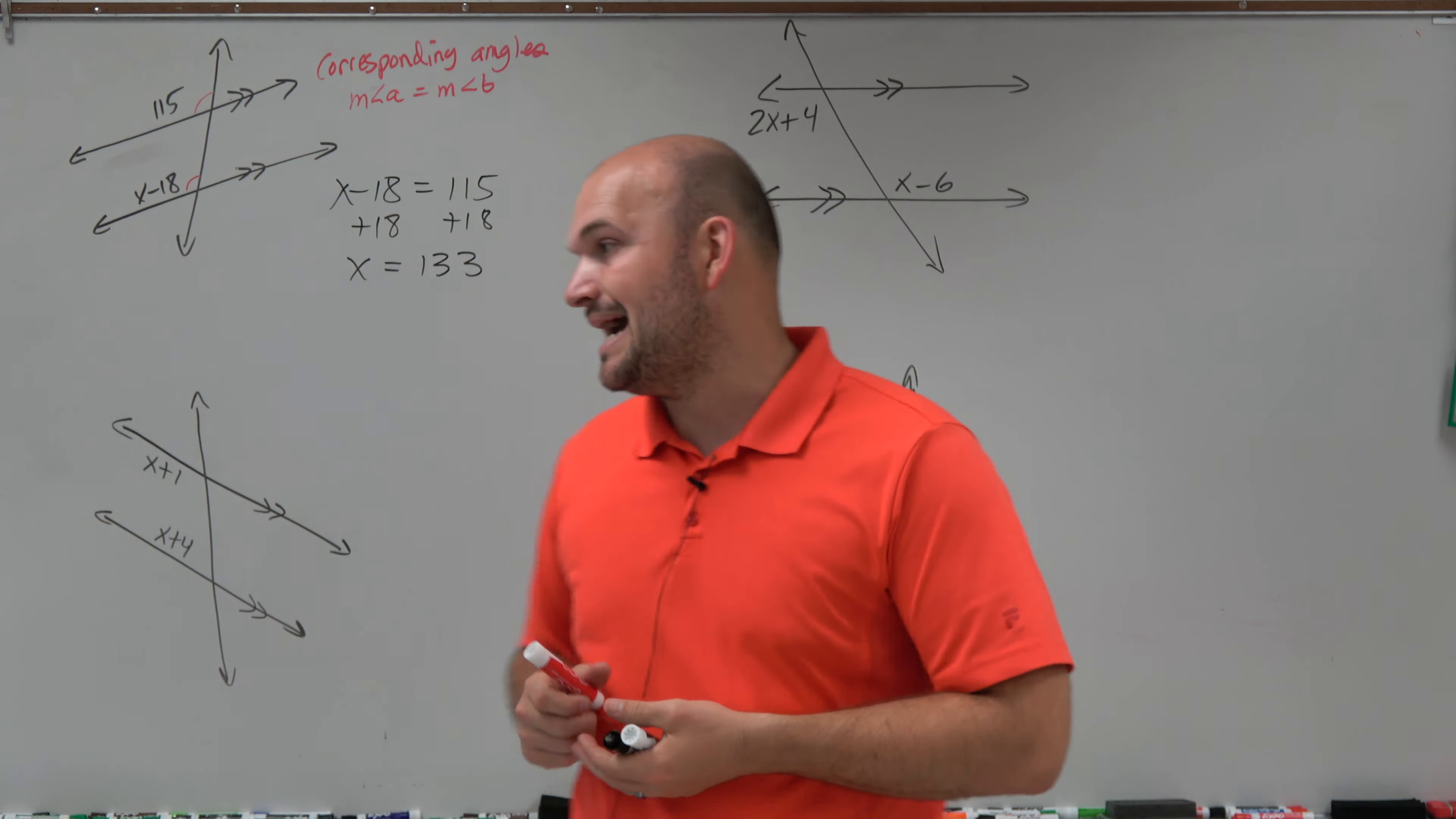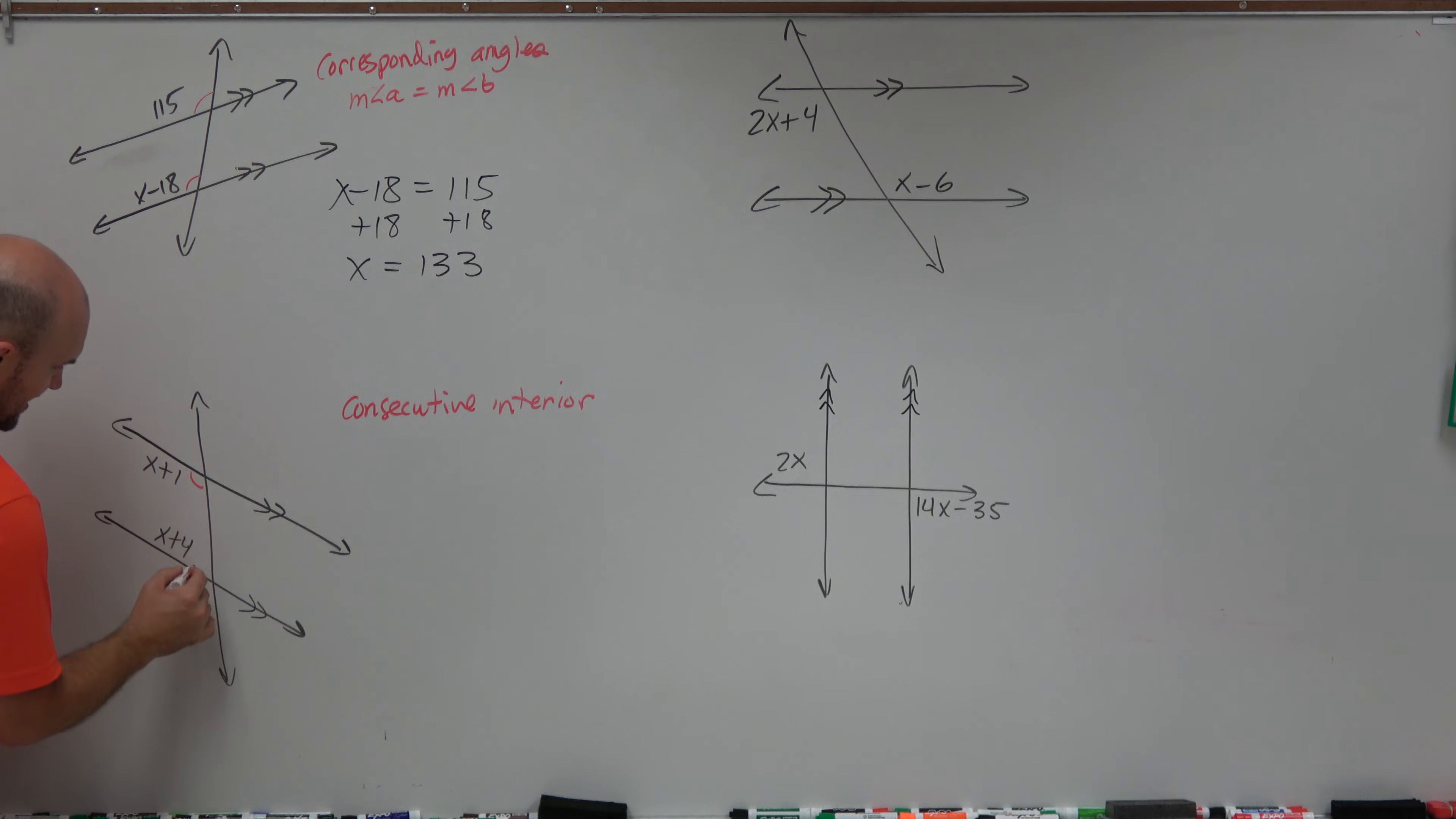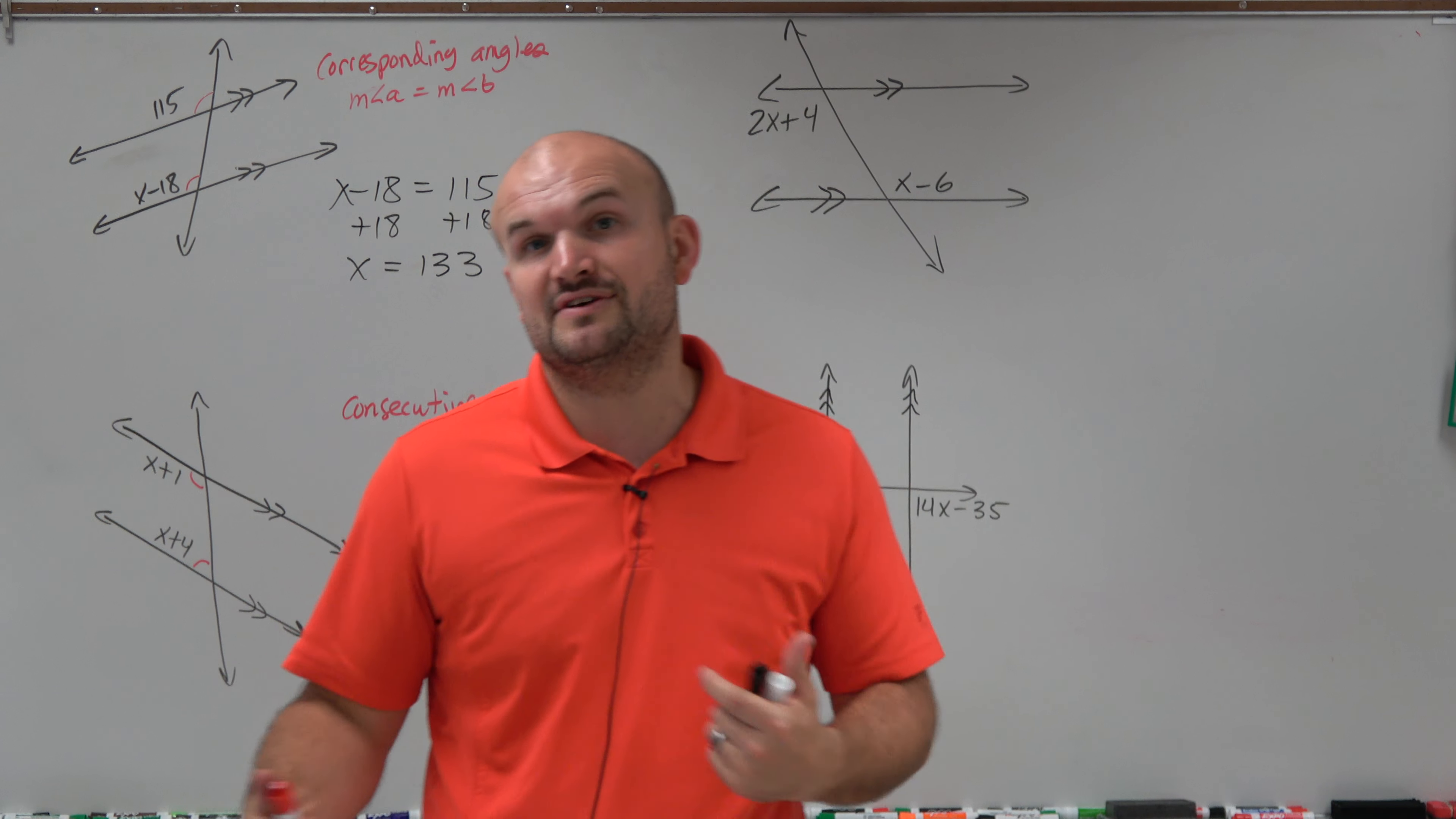The next one here is you can see that we have two angles that are on the interior, and they're on the same side of the transversal line. The transversal line is the line that's going to intersect your parallel lines. So those are what we call consecutive interior angles.